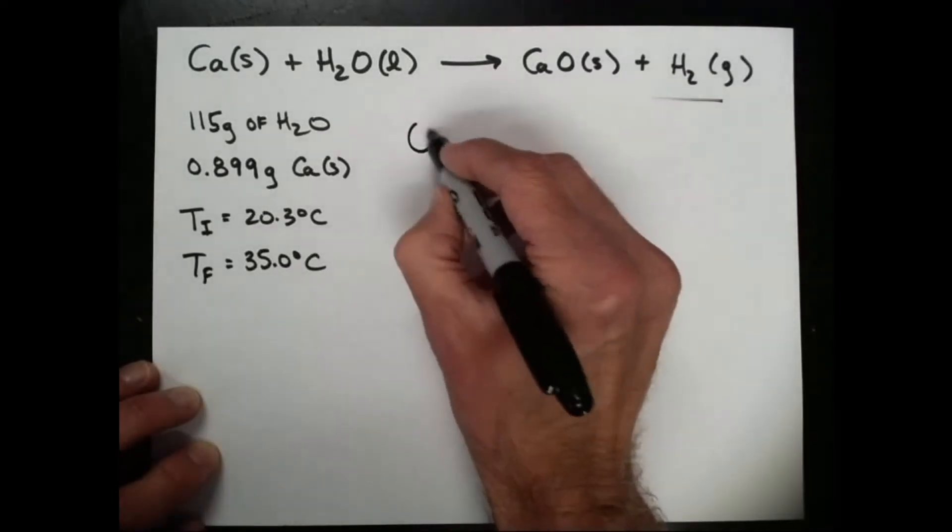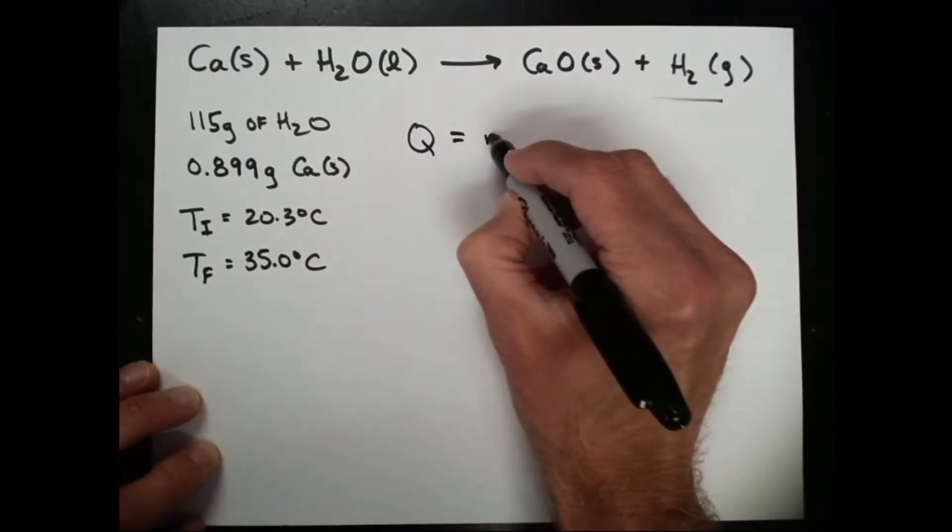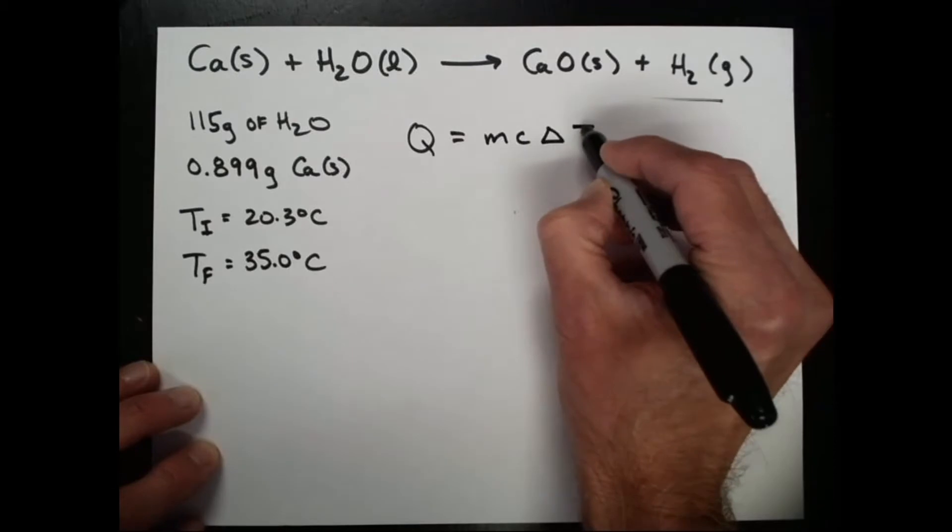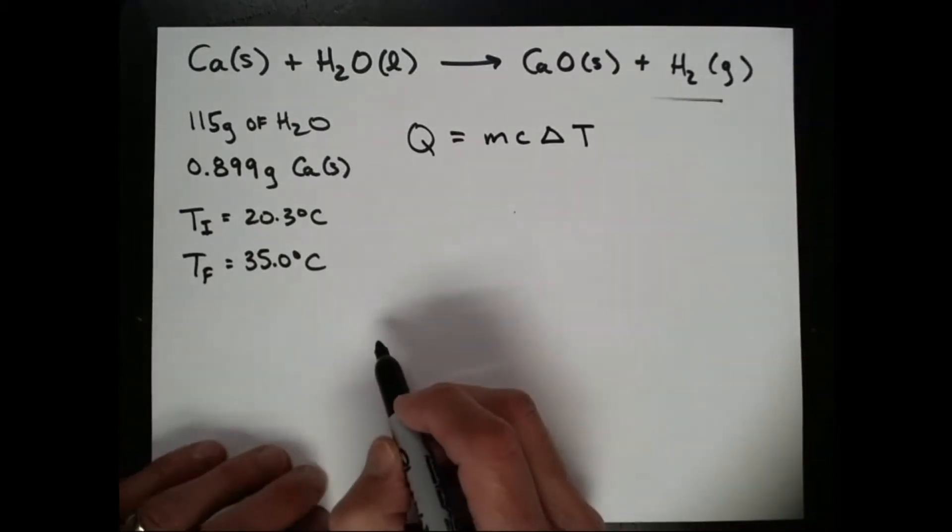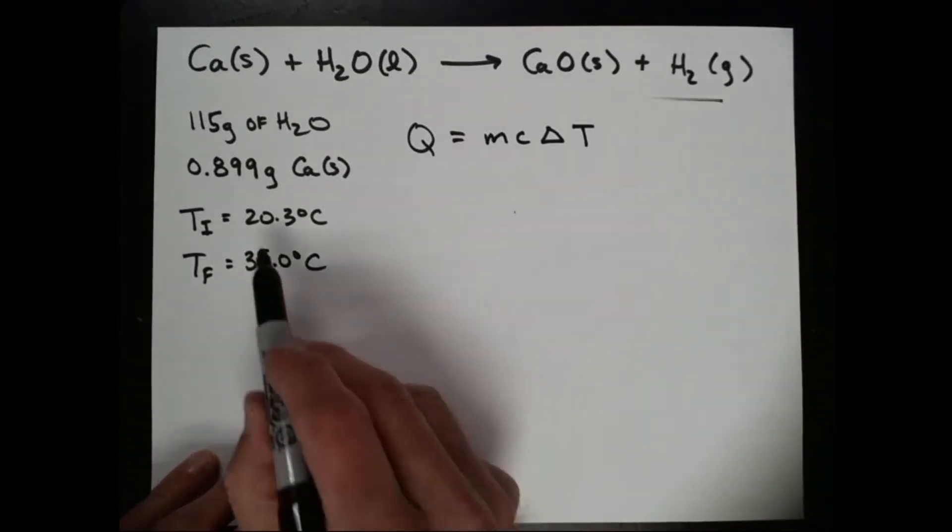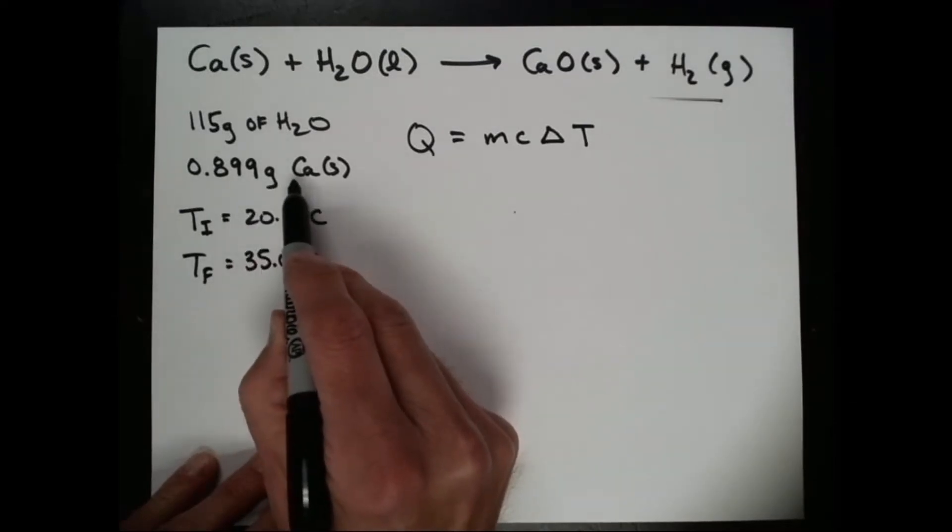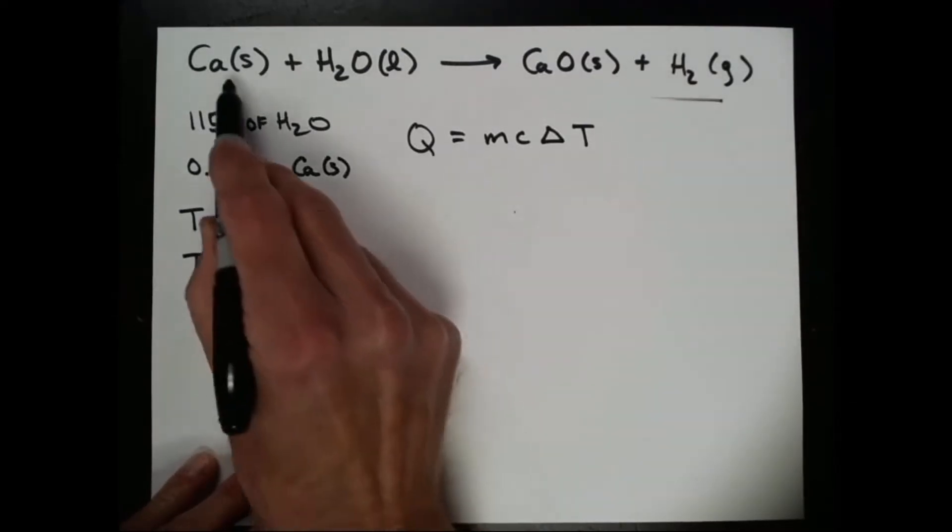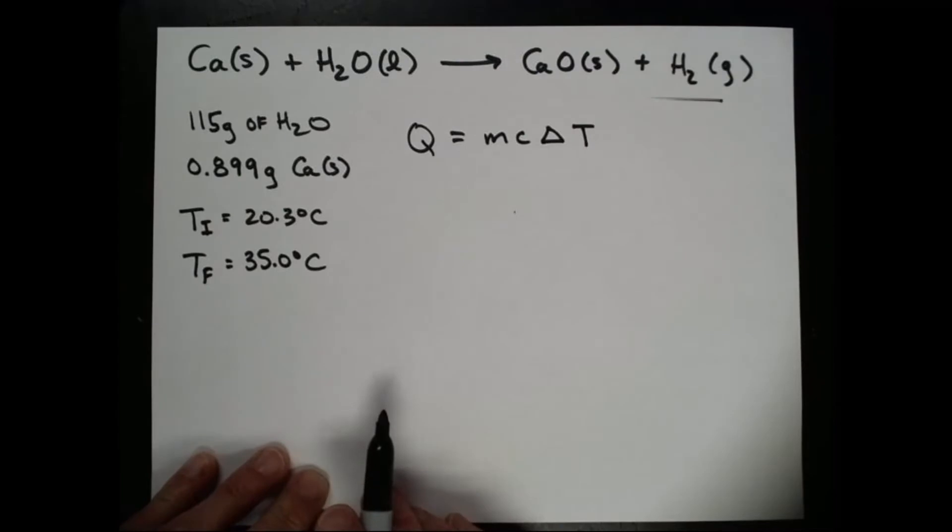We can use the heat equation, Q equals MC delta T, to find the energy that was released into the water through the reaction of 0.899 grams of solid calcium undergoing this particular reaction.